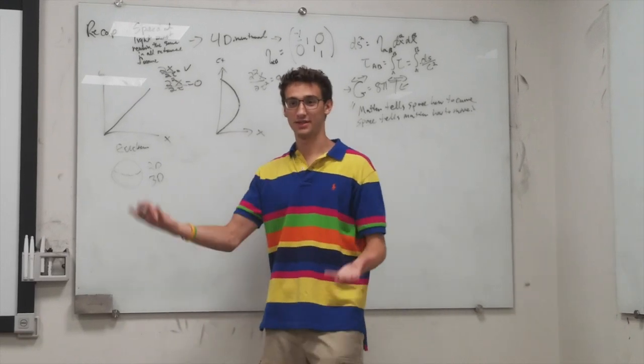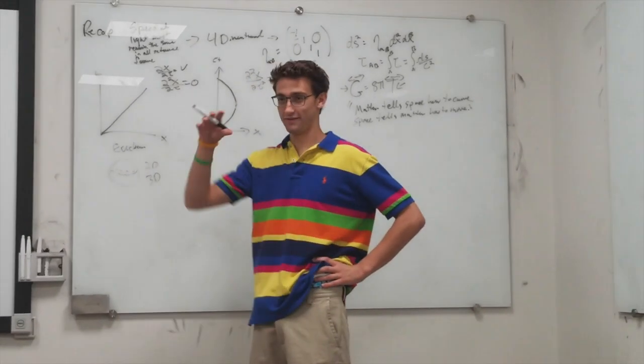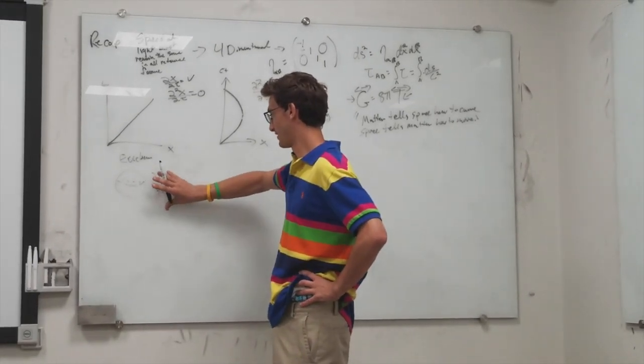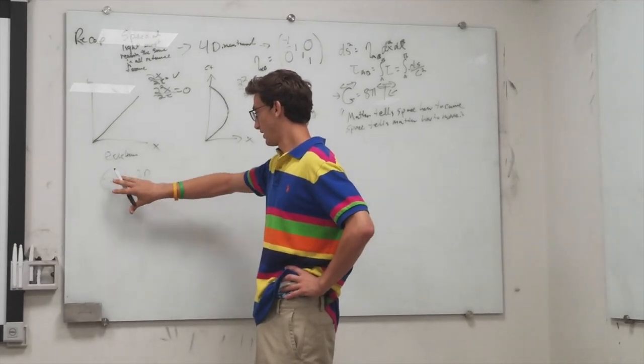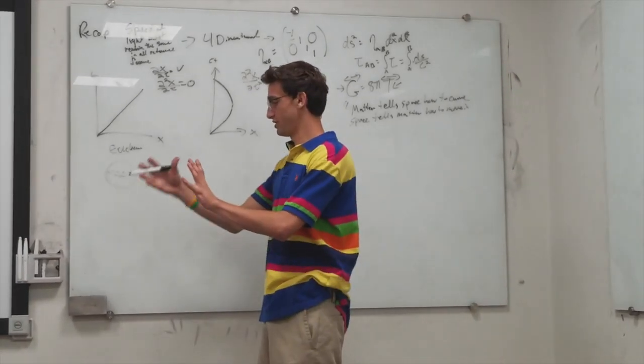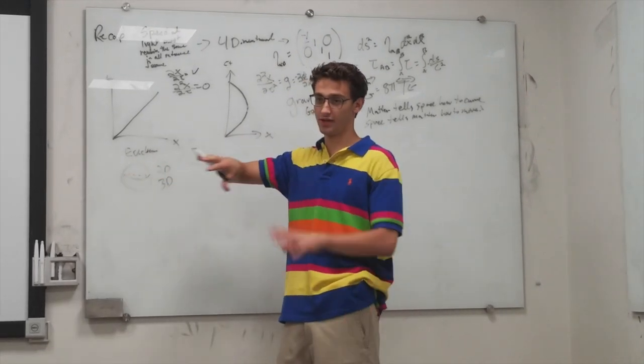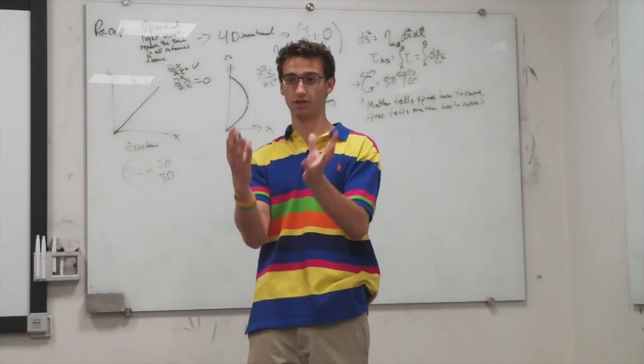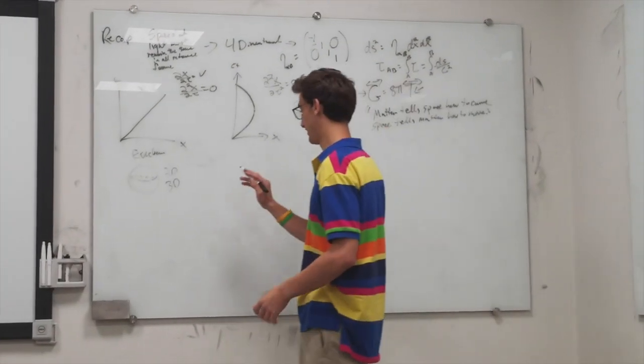When you curve surfaces, the geometry gets altered a little bit. I can give you an example. In a triangle the sum of all the angles is what? 180 degrees, right?